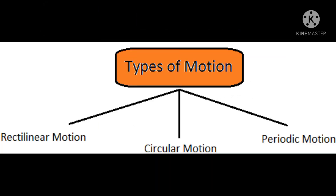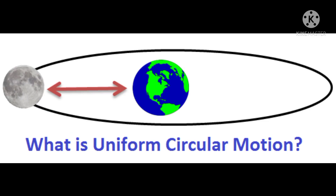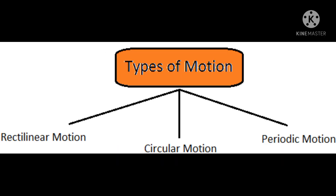Now let's discuss about circular motion. Circular motion means if an object moves in a circular path, we can say that object is in circular motion. The third type of motion is oscillatory motion or periodic motion. Oscillatory motion means the to and fro path of an object is said to be oscillatory motion.